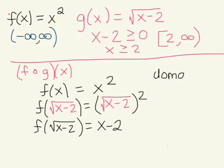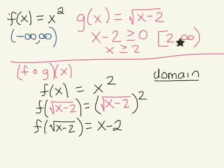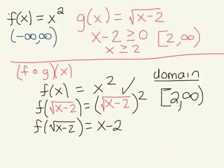When finding the domain of a composition of functions, you have to pay attention to two different things: the domain of the function you plugged in, and the domain of your final result. The final result here is linear, so its domain is negative infinity to positive infinity. But the domain of g(x) — what we plugged in — is from 2 to positive infinity. You take what works for both: one says take everything, the other says take from 2 and up, so only 2 and up works for both. The domain is from 2 to positive infinity.